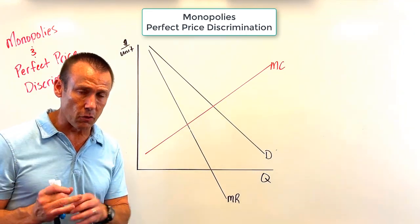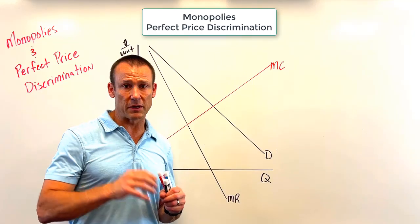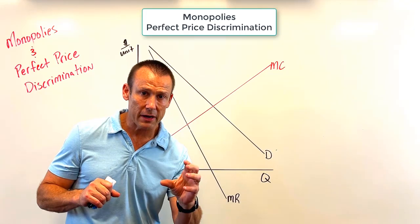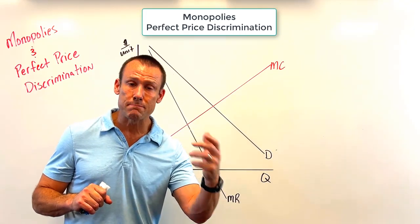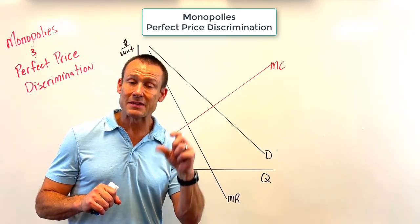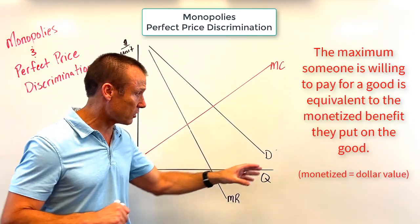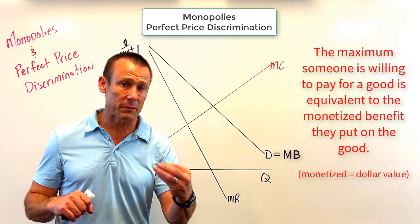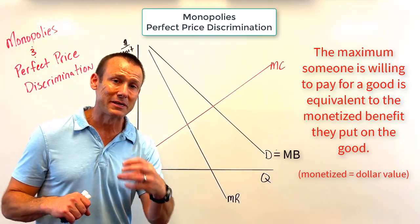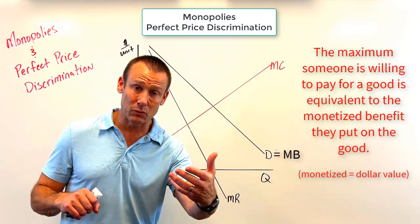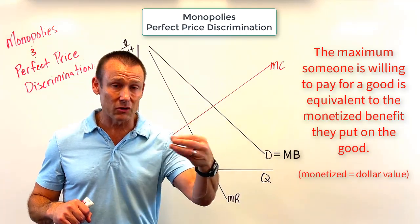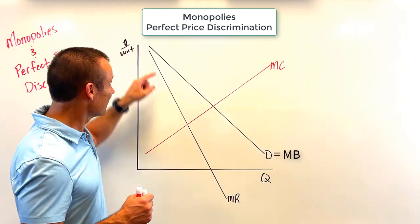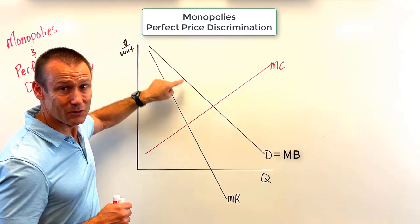That's why MR breaks away at twice the slope. With perfect price discrimination, we charge a price equal to the maximum each person is willing to pay, which is based on their dollar benefit from the good. The maximum somebody's willing to pay is the total benefit in dollar terms they get from the good.